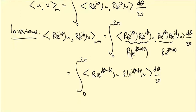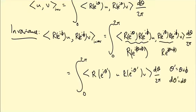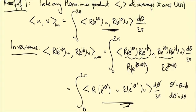This looks just like the formula for the invariant inner product, except we have θ+φ instead of θ. I can remove that by the change of variables θ' = θ + φ. Since φ is just a fixed number — a fixed element of the group — dθ' = dθ. Looking at the resulting formula versus the original, they are exactly the same with θ replaced by θ', which is just a dummy integration variable. So this equals ⟨u, v⟩_inv, proving the new inner product is invariant.